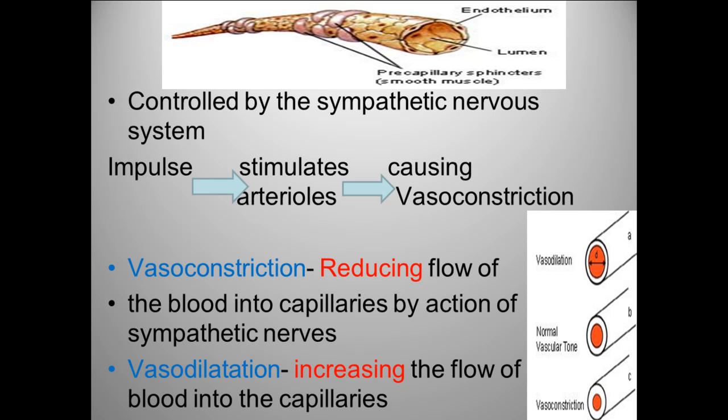When you exercise, more blood flows to the surface of the skin and therefore it enables you to cool down, which is why you appear red when you run around for a long period of time — lots of blood is moving to the capillaries near the surface of the skin. When you're cold, the blood moves selectively towards your vital organs to promote survival, and therefore you appear more pale.